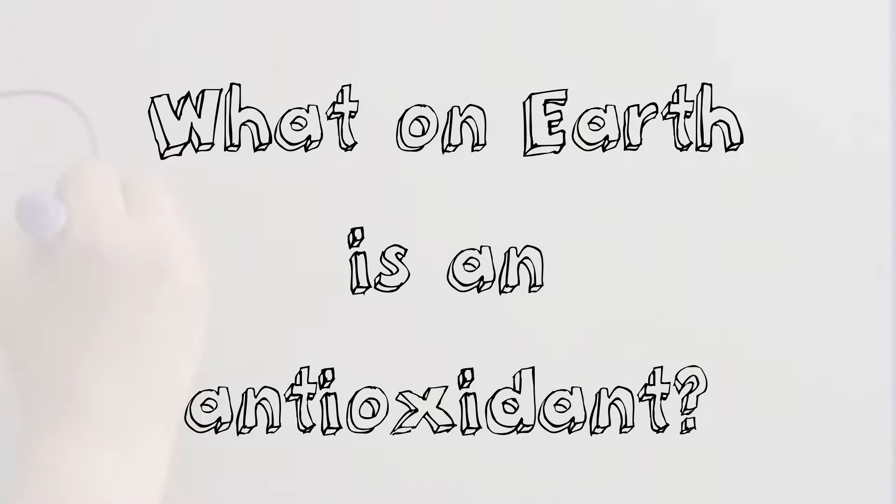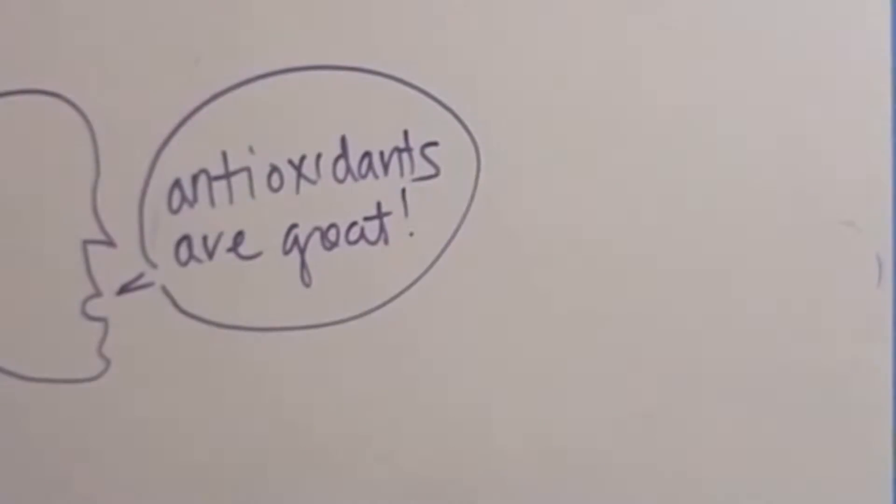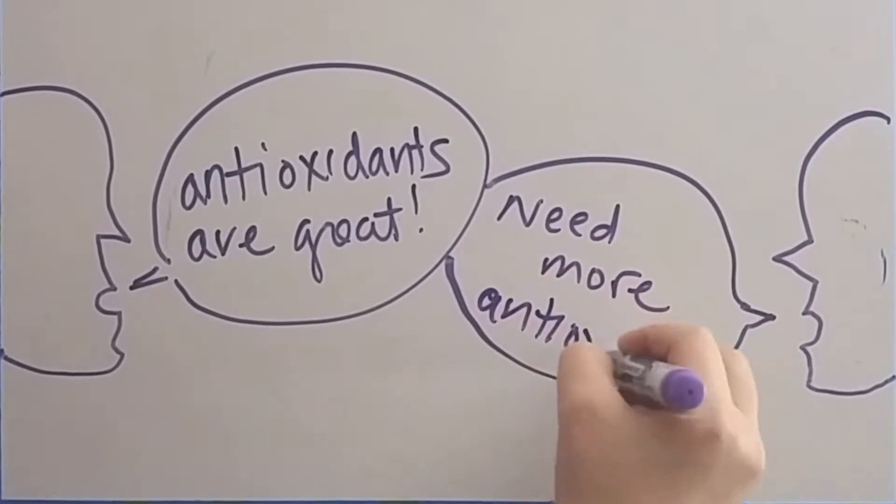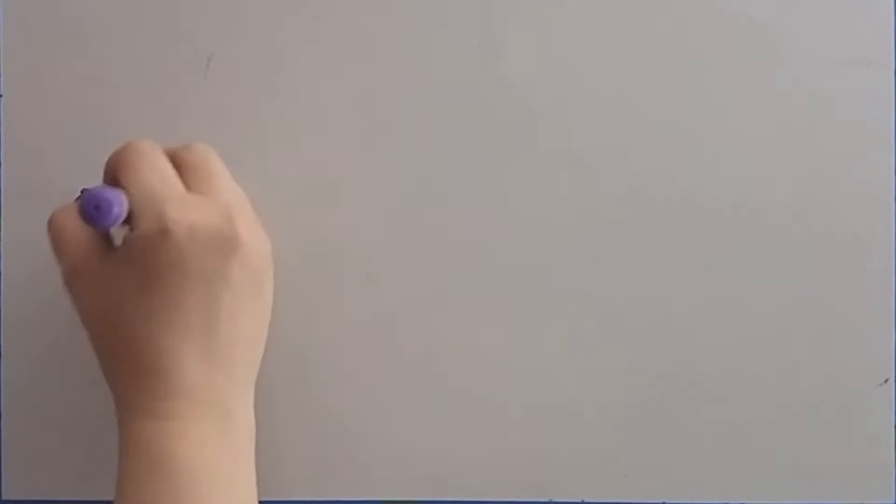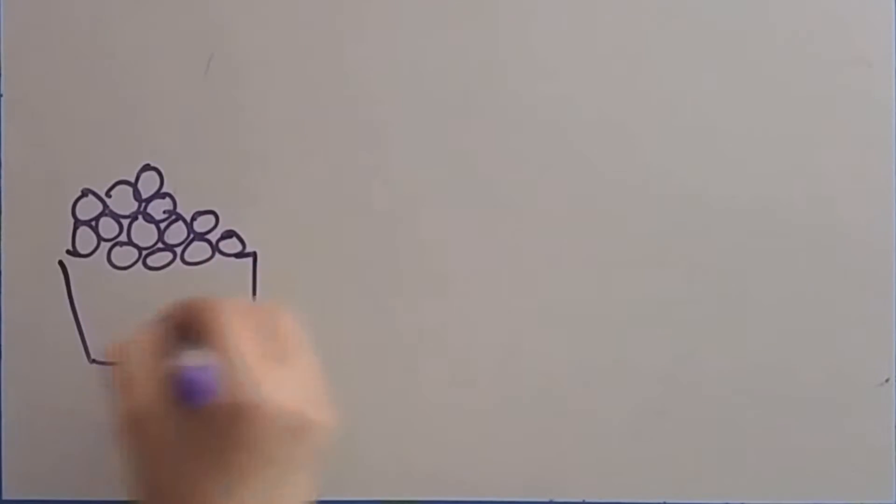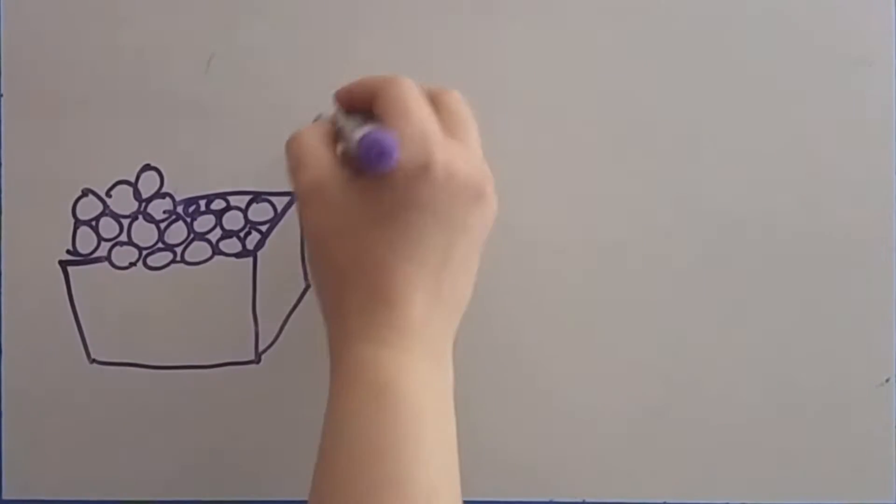What on earth is an antioxidant? We hear this word often when describing the nutritional value of foods. Supposedly blueberries, pomegranates, sweet potatoes, kale, and even red wine are high in antioxidants.